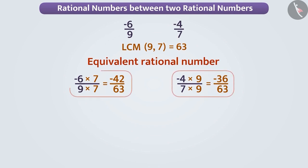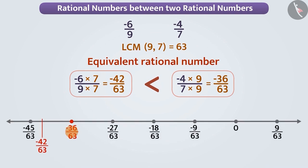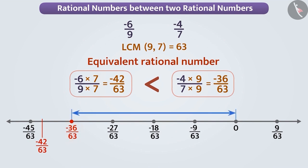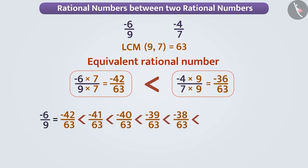Minus thirty-six by sixty-three is greater than minus forty-two by sixty-three because on the number line, minus thirty-six by sixty-three is to the right of minus forty-two by sixty-three. We can also say that minus thirty-six by sixty-three is closer to zero than minus forty-two by sixty-three. In this way, we can now write the rational numbers between these two rational numbers.